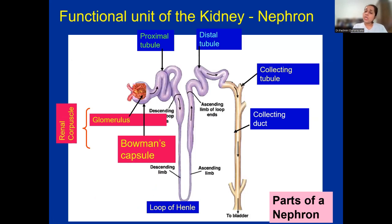If somebody asks what is the functional unit of the kidney, the answer is the nephron. If you take a nephron, you can see there is a renal corpuscle. The renal corpuscle is mainly composed of two parts: a capillary tuft known as the glomerulus, as well as a Bowman's capsule — a capsule-shaped renal tubule which embeds the glomerular tuft.